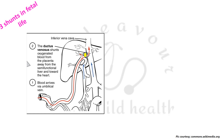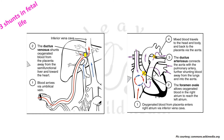In short, there are three shunts in fetal life as seen more clearly in this diagram. Blood arrives from the placenta via the umbilical vein — oxygenated blood depicted in red. First, the ductus venosus shunts oxygenated blood from the placenta away from the semi-functional liver and towards the heart. Second, the foramen ovale allows oxygenated blood in the right atrium to reach the left atrium. Third, the ductus arteriosus connects the pulmonary artery with the aorta, shunting blood away from the lungs into the aorta. Mixed blood then travels to the head and body and back to the placenta via the descending aorta and umbilical arteries.